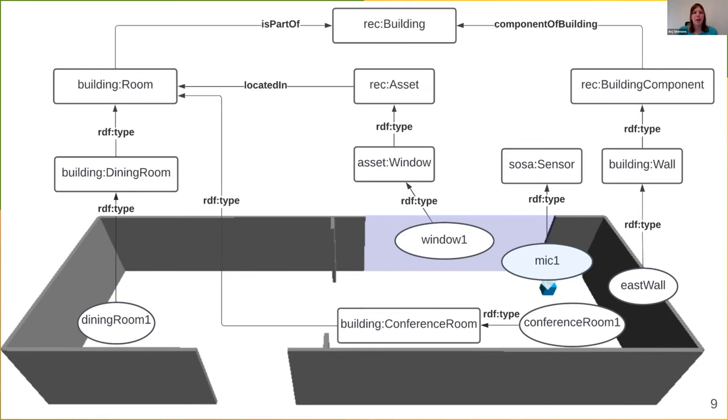And then being an ontology, we can look these things up. For example, a window is a kind of asset. It's located in a room, and it's a part of the building. So what this allows us to do is reason a little bit more about what might occur. For example, if you were to see a fork or a knife in a dining room, that's probably to be expected. But if we were to pick up a knife in a conference room, then that would be an indication that perhaps something suspicious is going on.